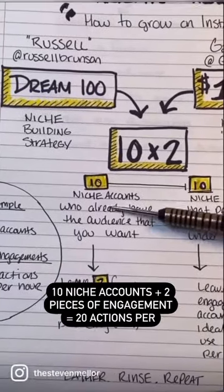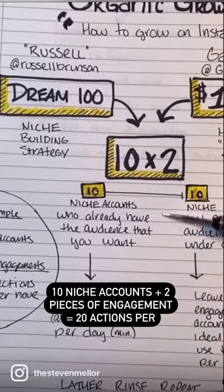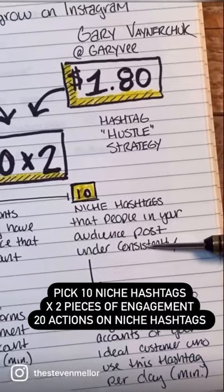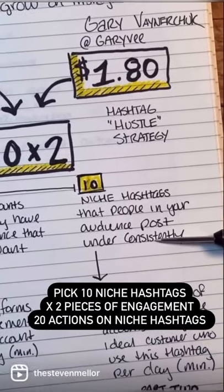You take the 10 niche accounts who already have the audience that you want. Then you want to pick 10 niche hashtags.